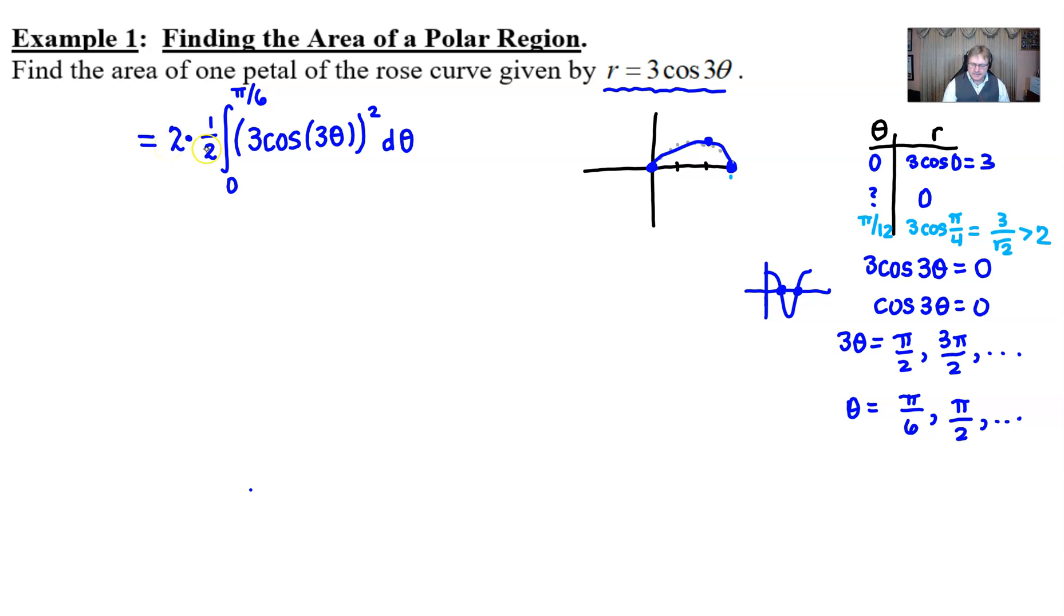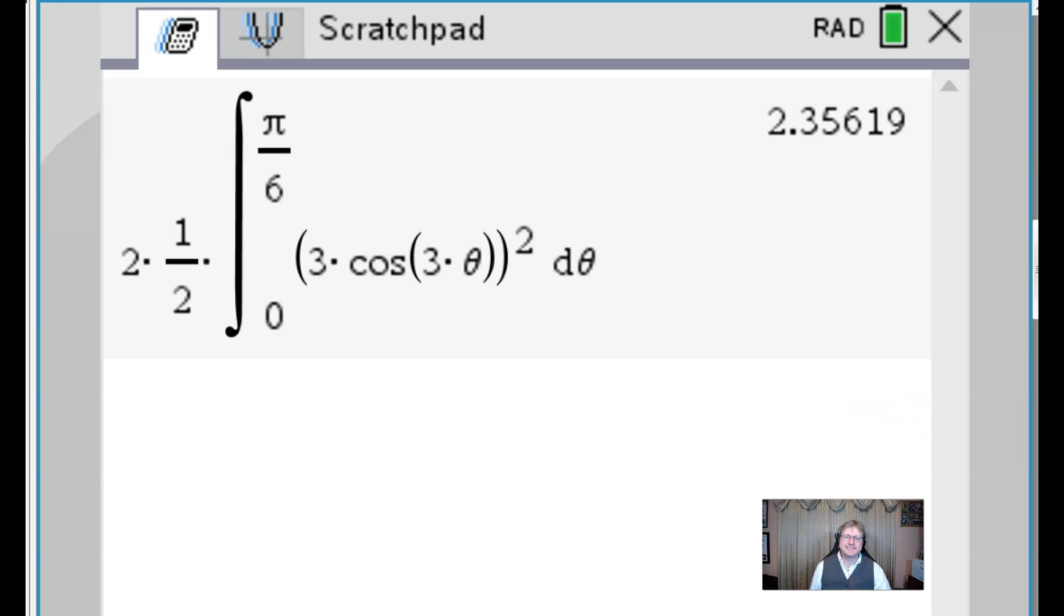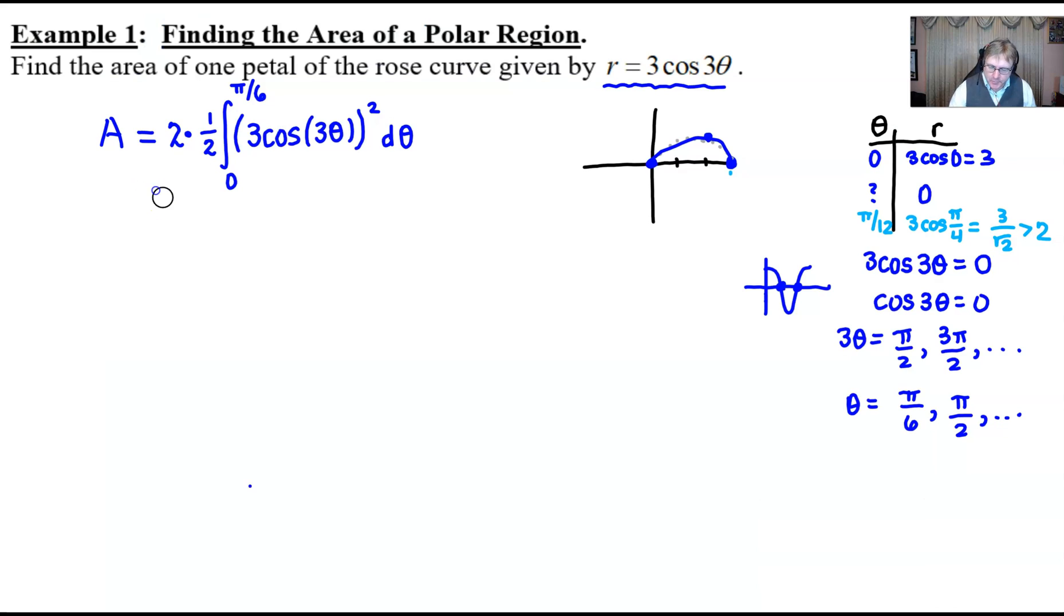I'm going to go ahead and send you over to the graphing calculator and we'll compute this area and see what we got. Boom here we are, that was pretty quick wasn't it. So we take that rose, 3 cosine 3 theta, we encase it all in parentheses so we can square it and we just integrate from 0 to pi over 6. Now the 2 times a half seems a little bit redundant because we know that's going to be 1 but I wanted to put that in there just to show you that I didn't completely forget it, and we get an answer of 2.356 that will just round and that will depict the area of that rose petal. So let's go ahead and call this approximately 2.356.